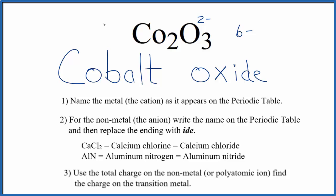Cobalt needs to be 6 plus to balance out, to give us a net charge of 0. 2 times 3 plus, that would give us 6 plus, these two charges would balance out, give us a net charge of 0.